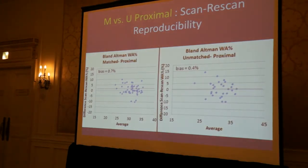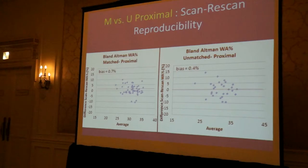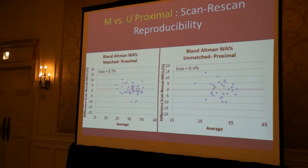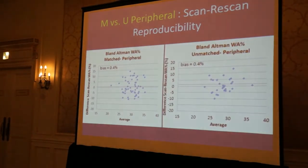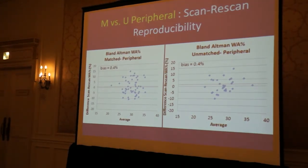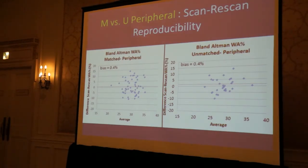We then calculated a Bland-Altman analysis to examine the bias and agreement between scanned and re-scanned images. On the y-axis we plotted the difference between scanned and re-scanned wall area percent, and the x-axis showed the average. We found an actual bias of 0.7% for proximal and 0.4% for peripheral images. Similar results were found for peripheral matched and unmatched images, both with a bias of 0.4%. Although both biases are small, they could aid detection within longitudinal studies, suggesting that similar disease progression occurs in specific lung regions.